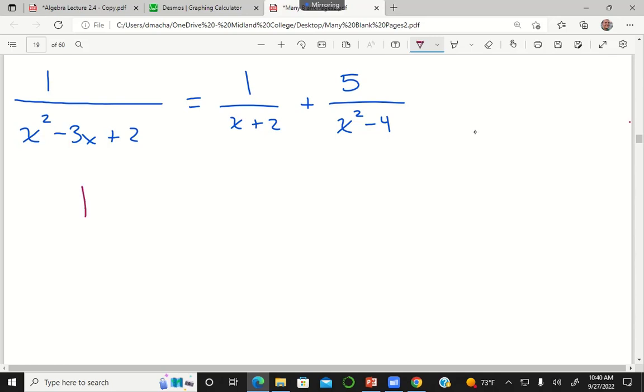On the left side, I have 1 over, and then how would I write that in factored form? So you can try that out. x minus 1 times x minus 2 would give me this quadratic because negative 1 times negative 2 is positive 2, and negative 1 plus negative 2 is negative 3.